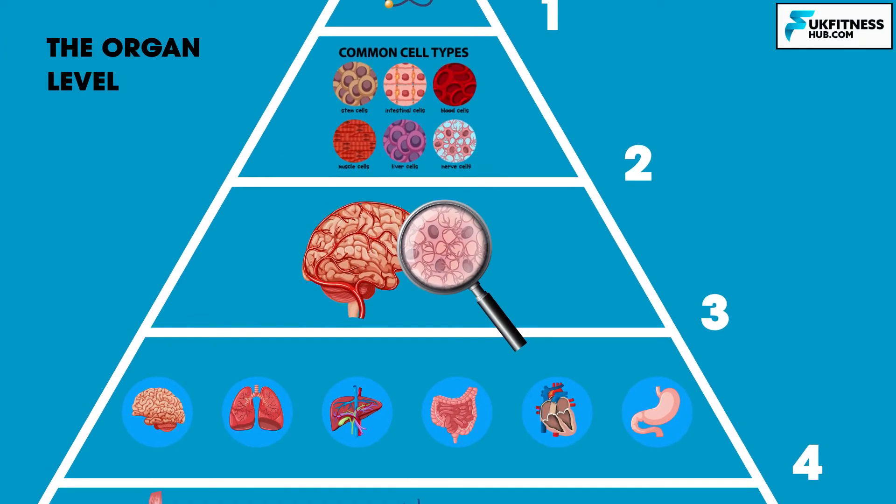Level 4: the organ level. Organs are made up of different types of tissues that together can perform the different functions of the body. Organs are recognisable structures of the body such as the heart, lungs and stomach, for example.